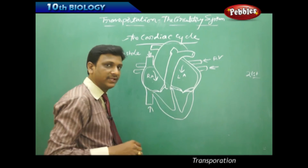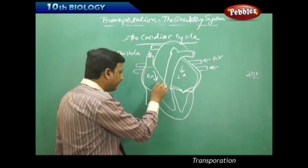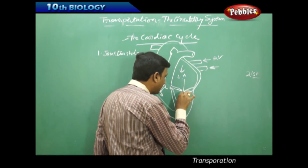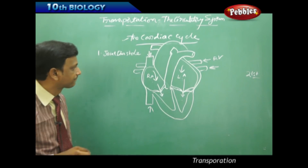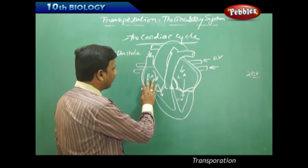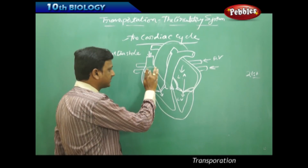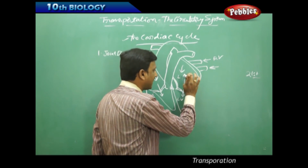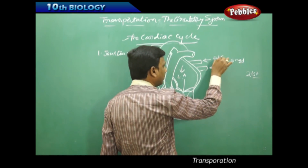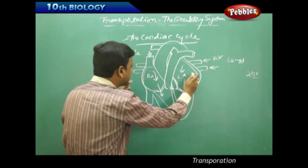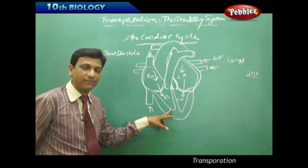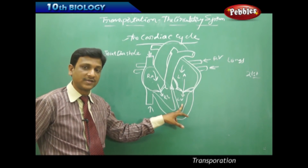The right atrium is filled with deoxygenated blood, which is sent down into the right ventricle, and the left atrium is filled with oxygenated blood, which is sent down into the left ventricle. When the two atria contract, the blood flows to the ventricles — the right ventricle becomes full of deoxygenated blood and the left ventricle becomes full of oxygenated blood.